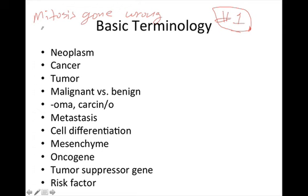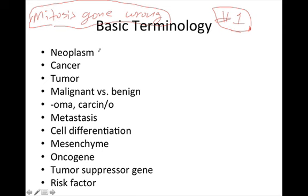The more cells are dividing and replicating their genetic material, the higher the chance that errors can occur and cause tumors to develop. If we also expose ourselves to hazardous environments that wreak havoc on the cell cycle, we further increase the chance of developing tumors. Cancer is a very prominent part of life — that's one of the unfortunate facts of life.